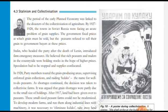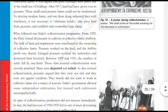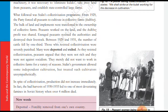Peasants worked on the land and the kolkhoz profit was shared. The kolkhoz were collective farms where cultivation happened and profits were shared with the government. Between 1929 and 1931, the number of cattle fell by one-third. Stalin allowed some independent cultivation but treated such cultivators unsympathetically — in reality, no one was truly independent in farming or other activities.